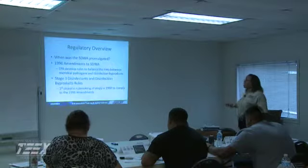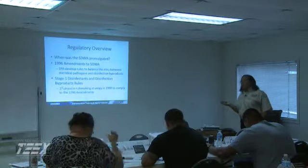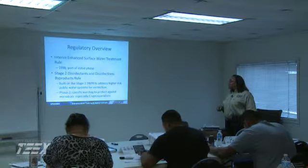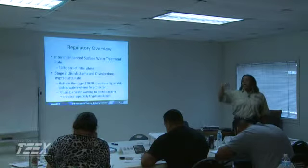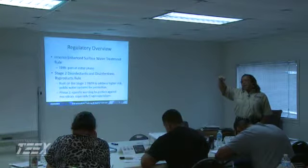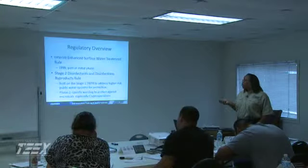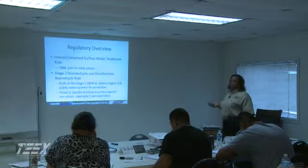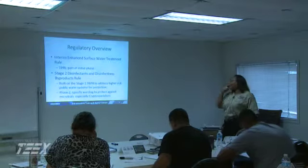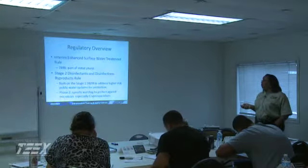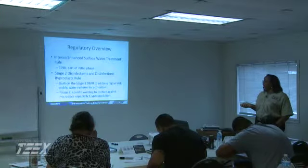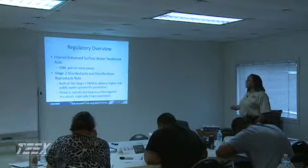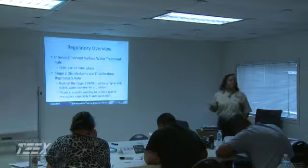We start seeing the Stage 1 disinfection and Stage 2 disinfectant byproduct rules come into play. In essence, Stage 1 was dealing first with microbial and surface water issues. Stage 2 says now we're going to look at the public water systems and our distribution system, in addition to just the treatment plant. Phase two of the Stage 2 rule says now we're going to look specifically at cryptosporidium. Keep in mind this was 1996–98, so it was after the Milwaukee outbreak.